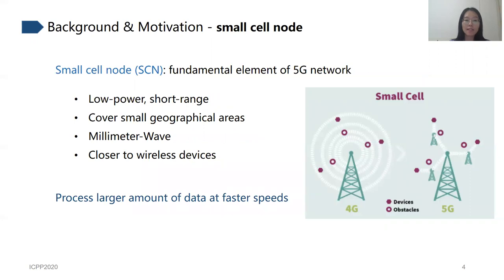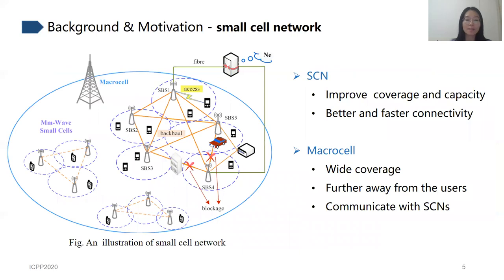In 5G networks, there is a fundamental element we call the small cell network, or SCN. SCN is usually a low power station. To provide high transmission speed, millimeter wave is used in 5G networks. Millimeter wave is easily blocked by obstacles. So compared to 4G stations, SCN covers a smaller area, but they are deployed closer to wireless devices. Therefore, SCN can process larger amounts of data at faster speeds.